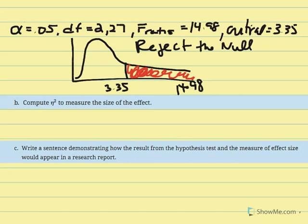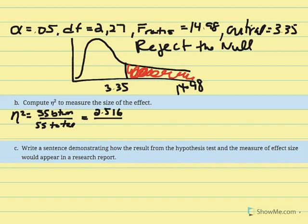We calculate eta squared: SS between over SS total equals 2.516 over 4.781 equals approximately 0.526. This means 52.6% of the difference in GPAs is accounted for by the amount of time students spend on Facebook while studying or completing homework.